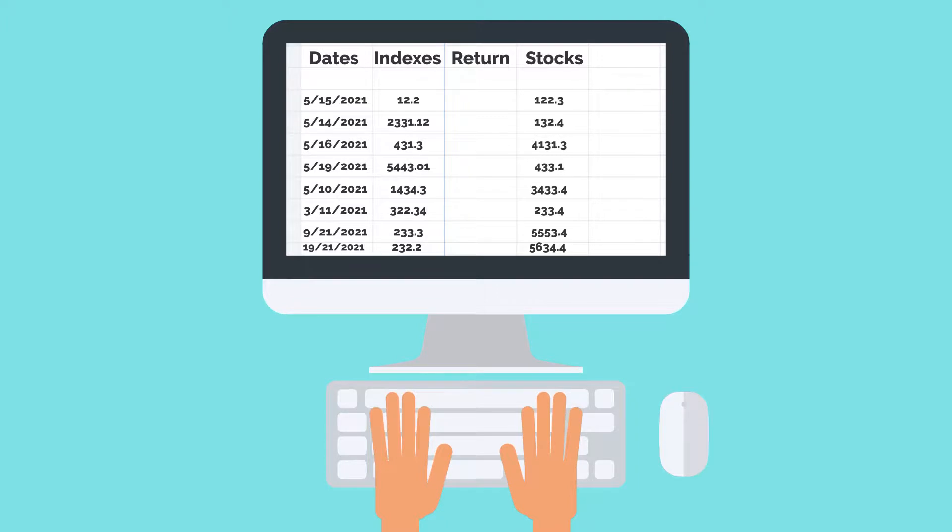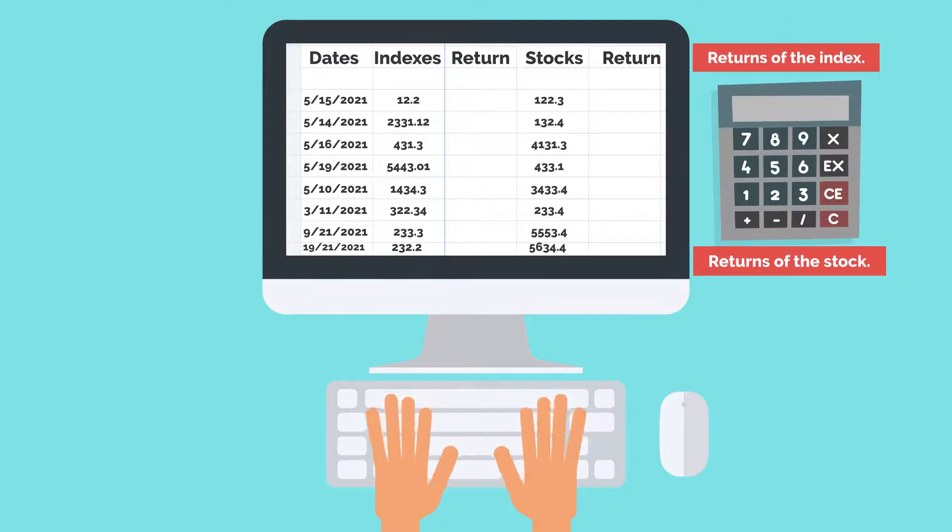After you have entered your data, create two return columns to the right of your price column. The column to the right of the index prices will be for the returns of the index. The column to the right of the stock's prices will be for the returns of the stock. After successfully adding these two return columns, begin calculating returns for the stock market index.